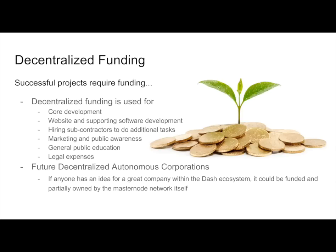What about funding? Funding is something that is often overlooked for decentralized projects. Most decentralized projects operate at the expense of the people who created them, and this can only happen for so long before people get tired of paying for things. We have created a decentralized revenue source for Dash so that it can pay for things like salaries of its employees, website design and building, hiring contractors, running marketing campaigns for public awareness, and even paying for legal expenses. It's a very robust funding source and it will allow us to grow into something more substantial for the future. Having something that is self-sustaining and completely decentralized is very important to the Dash project's long-term success.